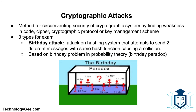Next we have cryptographic attacks. A cryptographic attack is a method for circumventing the security of a cryptographic system by finding a weakness in a code, cipher, cryptographic protocol, or key management scheme. Three types of cryptographic attacks on the CompTIA Security+ 601 exam are: Birthday attacks — this is an attack on a hashing system that attempts to send two different messages with the same hash function, causing a collision. It is based on the birthday problem and probability theory, also known as the birthday paradox.